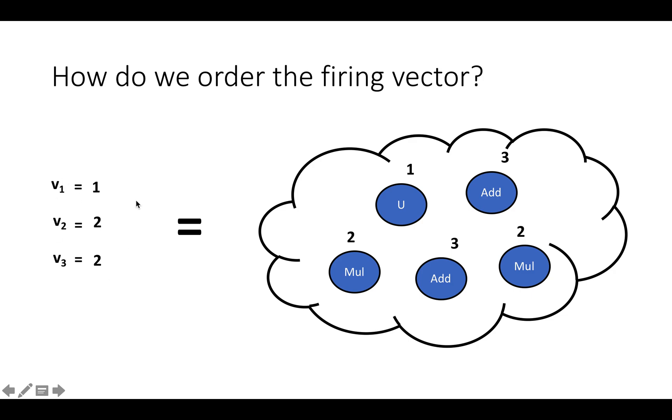So like I was mentioning there, a firing vector really just kind of represents an unordered sequence that contains one upsample, two adds, and two multiplies. And now that we've found it, we need to refine this into a complete schedule by figuring out the ordering of these events within the sequence. And that's what I'm going to talk about when we get to the next video. So I'll see you in the next video.